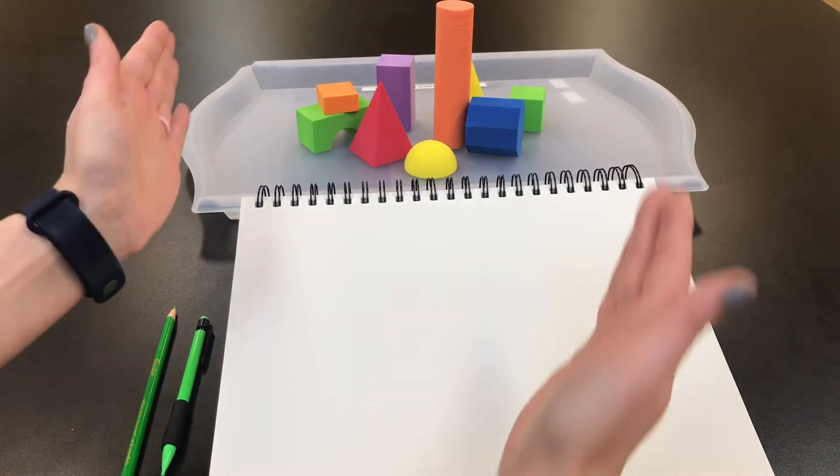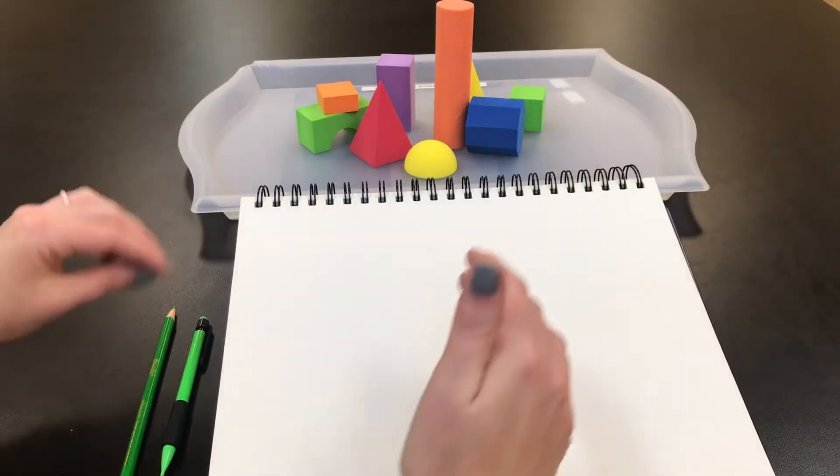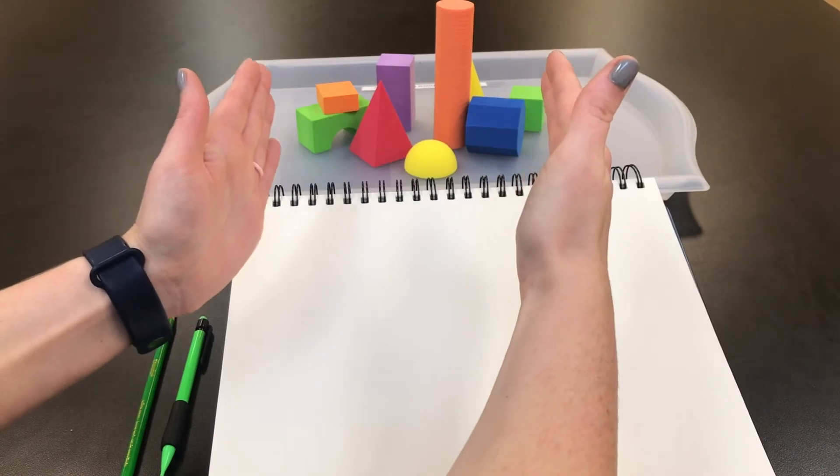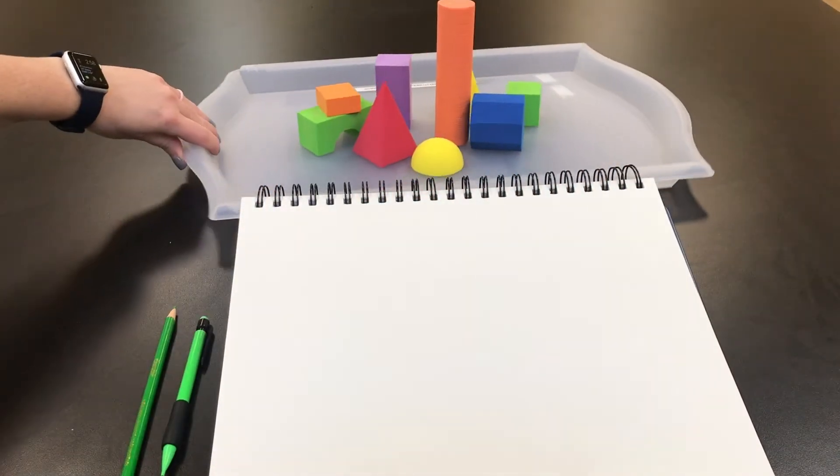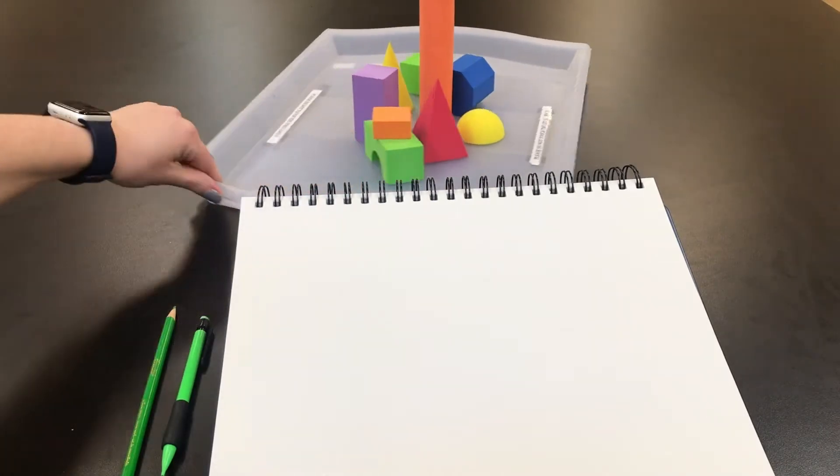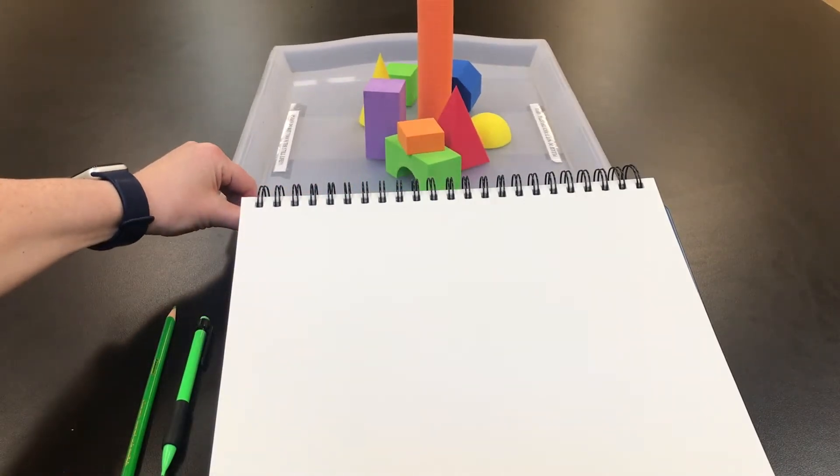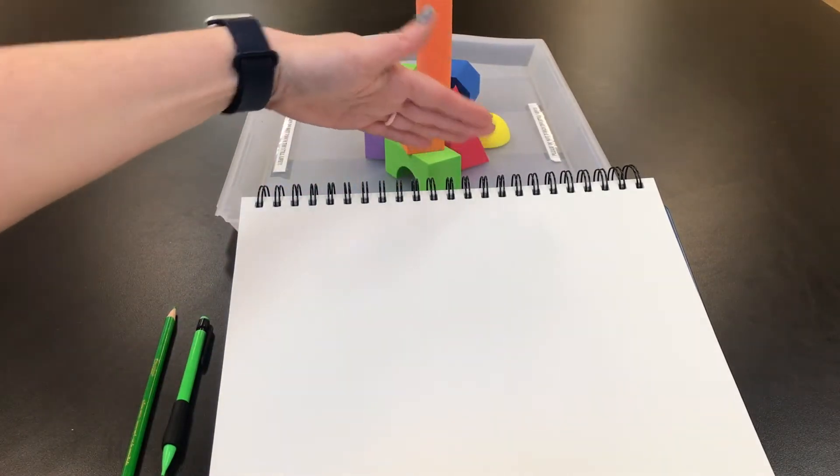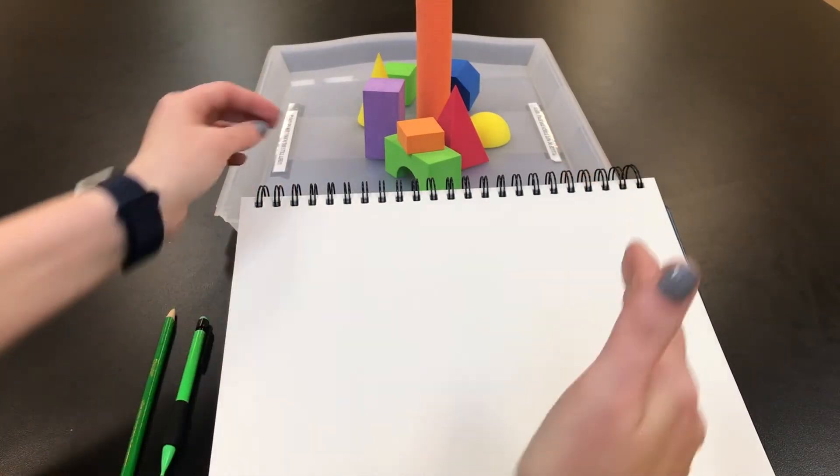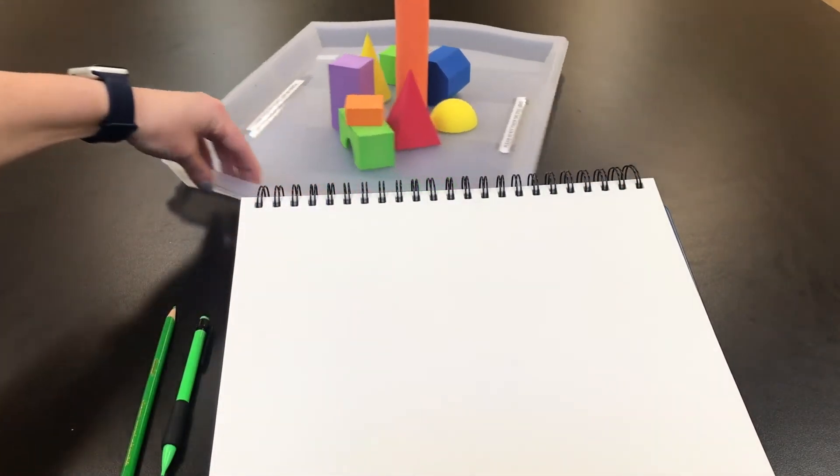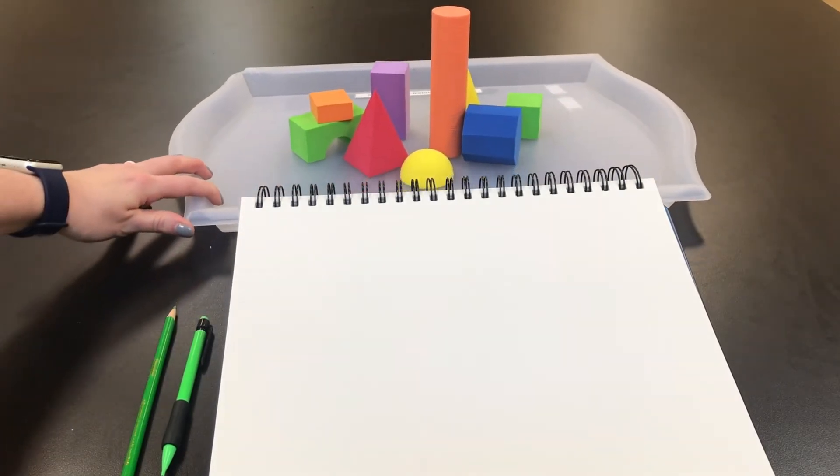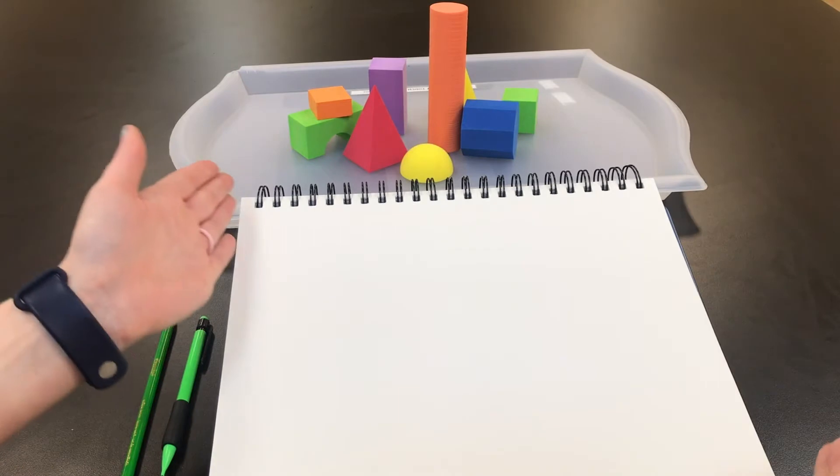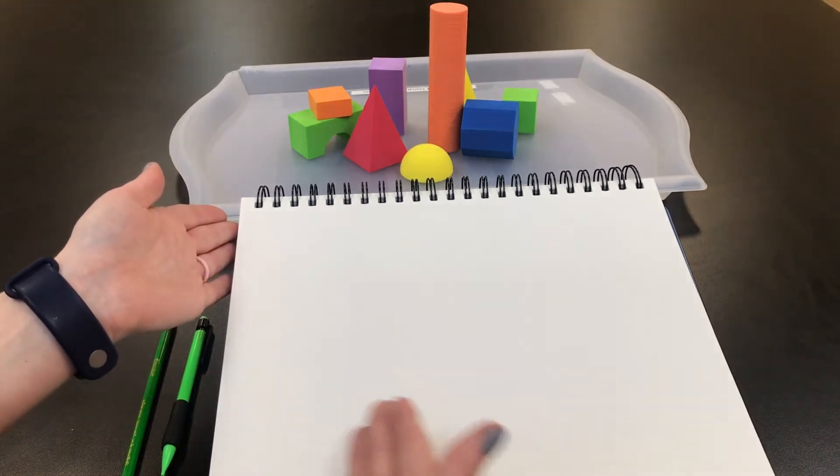The first thing I do is look at the proportions of the still life. Is it wider or is it taller? If you're seeing the still life from this angle, it's taller than it is wide, so I would turn my sketchbook portrait orientation. If you are seeing the still life from this angle, it's likely to be wider than it is tall, so I'm going to turn my sketchbook landscape.